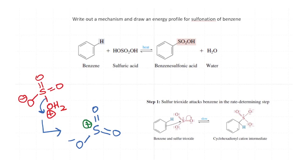Write out a mechanism and draw an energy profile for sulfonation of benzene. The overall reaction of sulfonation of benzene is the conversion of benzene to benzene sulfonic acid. You need some heat and you would need to add sulfuric acid.